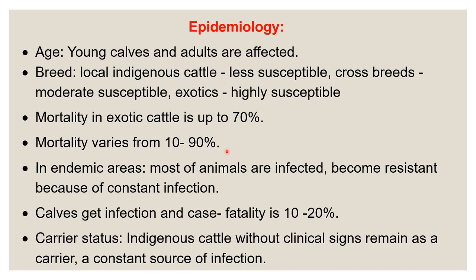In endemic areas, a constant low-grade infection is present in the environment and in the cattle. Most animals are infected and become resistant because in endemic areas animals are constantly receiving low-grade infection from ticks and are naturally resistant. The case fatality rate is 10 to 20%. Calves get infection and as they grow into adults they develop resistance; cows are slightly more susceptible.